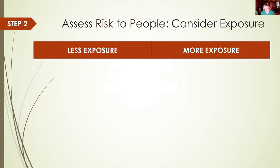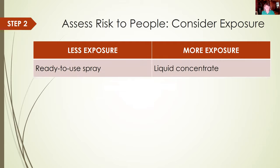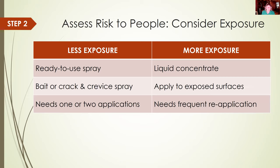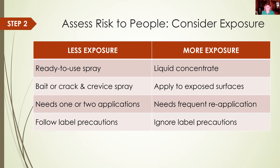For assessing exposure itself, just think about how the product is used. A ready-to-use spray might pose less chance of exposure because you don't have to mix it — there's less chance of spilling or splashing, and dilute pesticide on your skin means lower exposure than spilling concentrate. Baits or crack-and-crevice sprays are designed to be put exactly where the pest is, less likely an area where you might be touching. If it only needs one or two applications, that may result in less exposure than something requiring frequent reapplication. And if you follow label precautions, there will be less exposure — you'll only put the pesticide where you're supposed to, use only the amount specified, wear gloves if necessary, and won't let people into treated areas until the proper time.